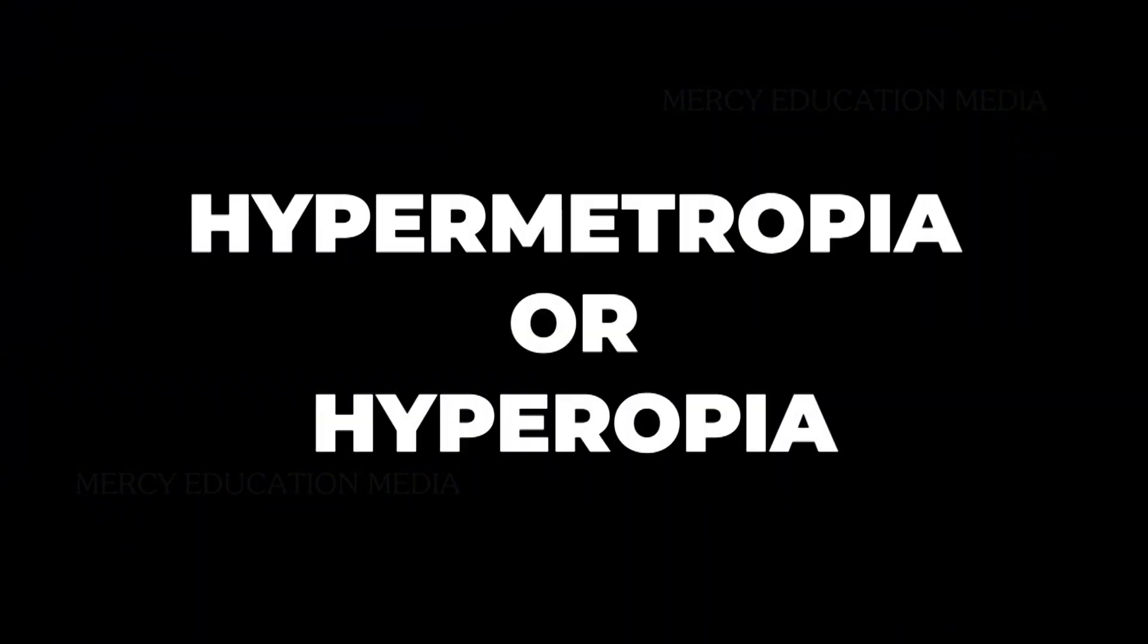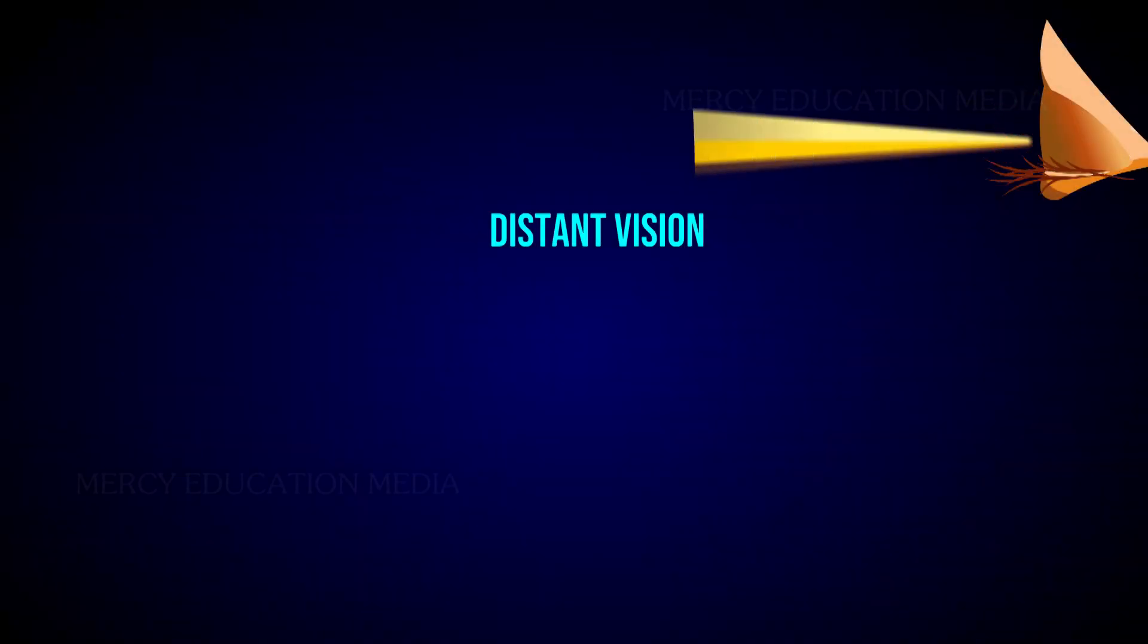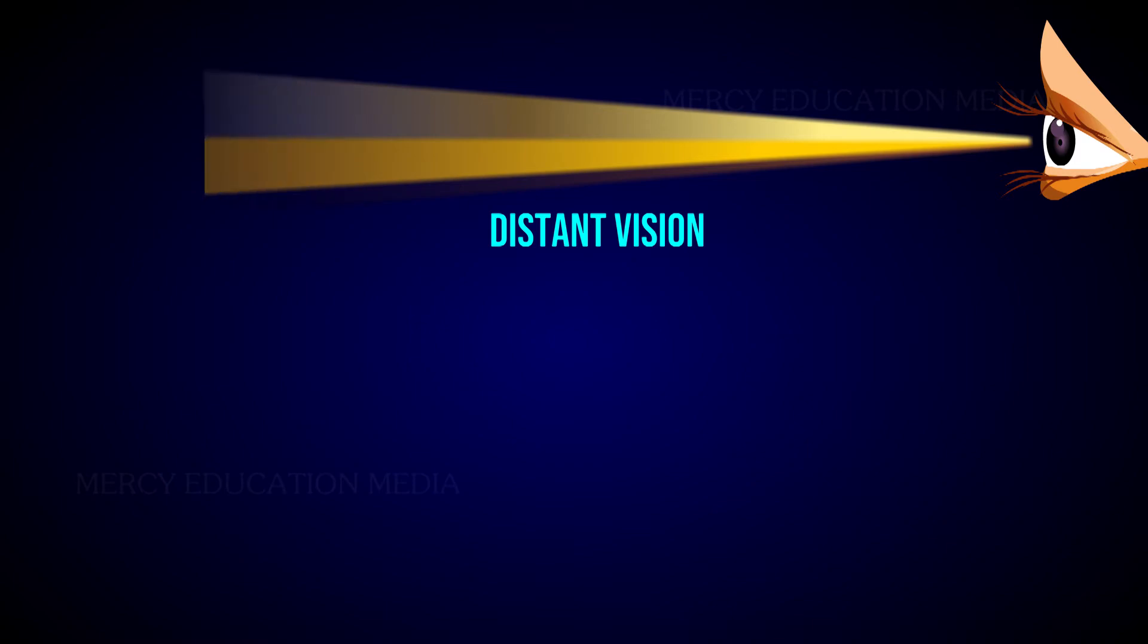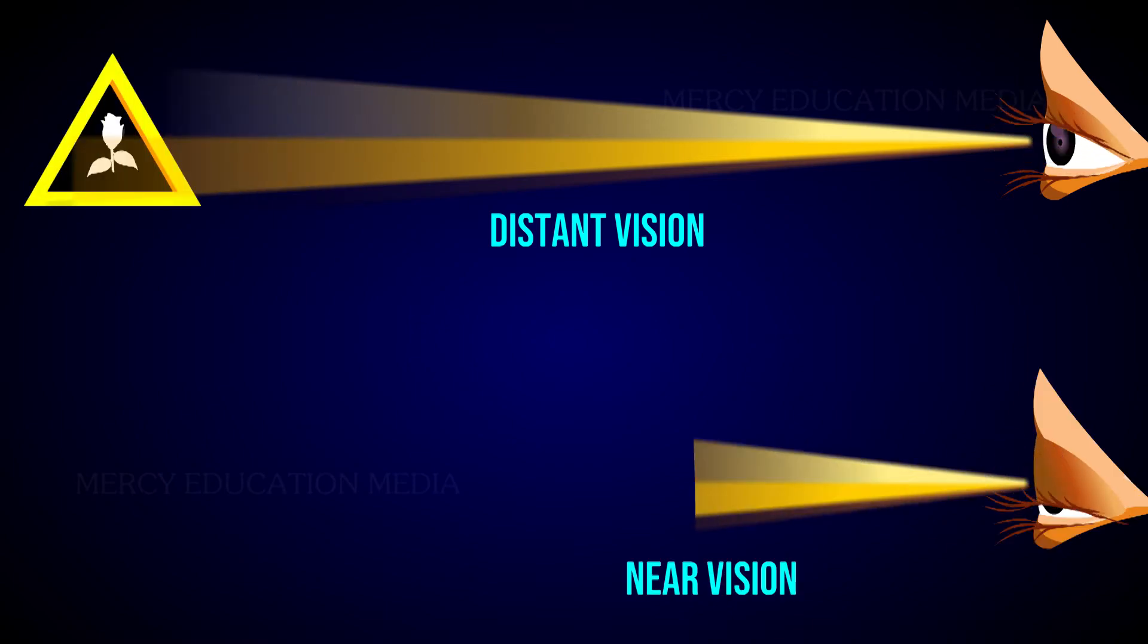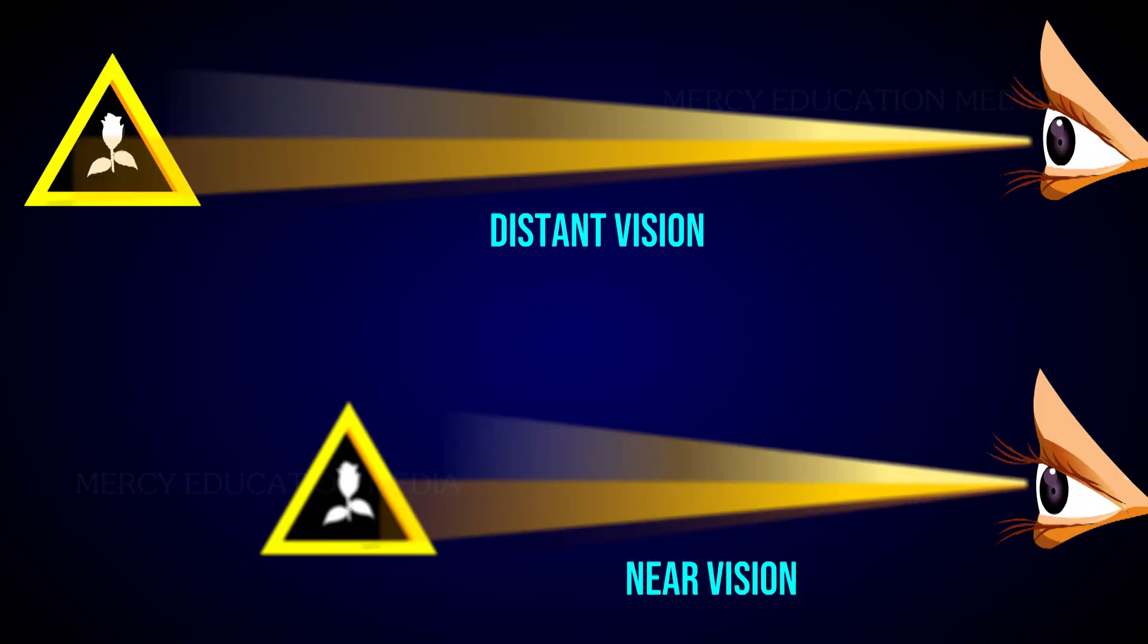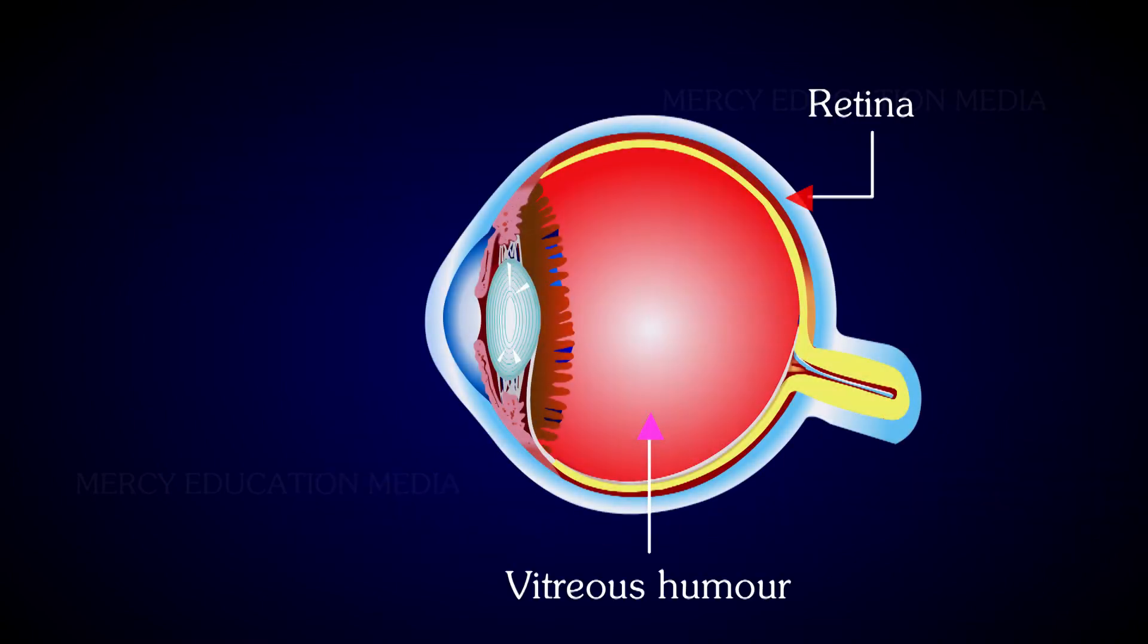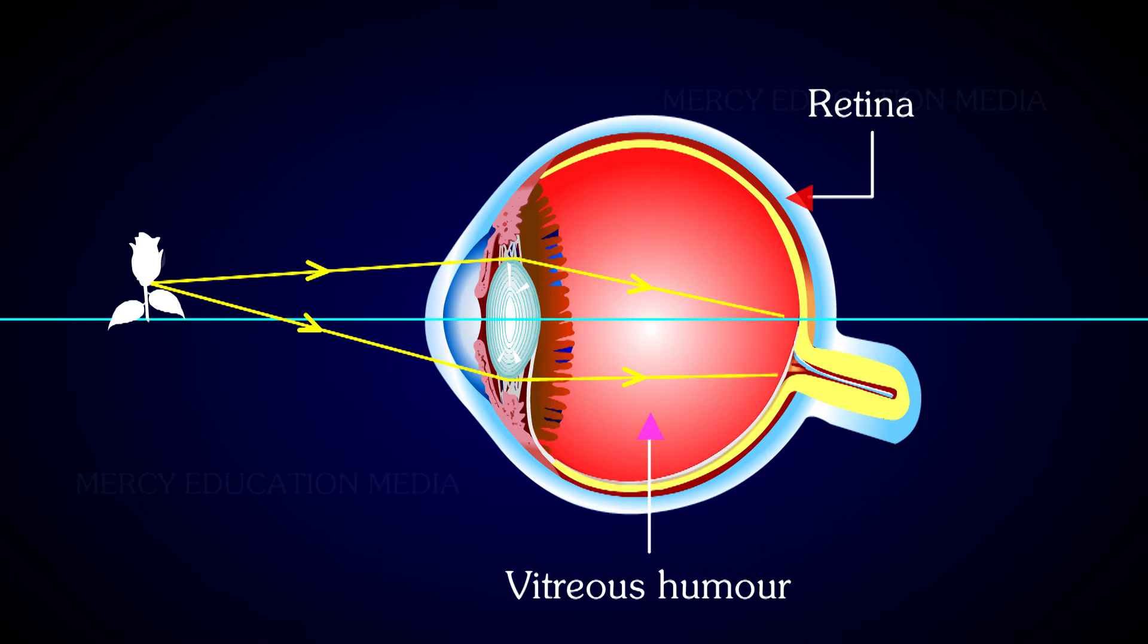What is hypermetropia or hyperopia? It is an eye defect in which the distant vision is clear while the near vision is blurred. This occurs when the light rays entering the eye converge behind the retina.